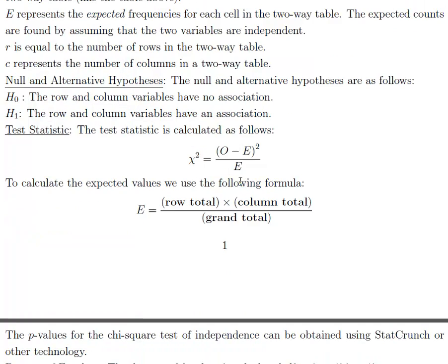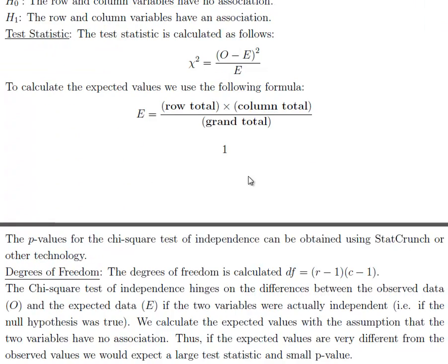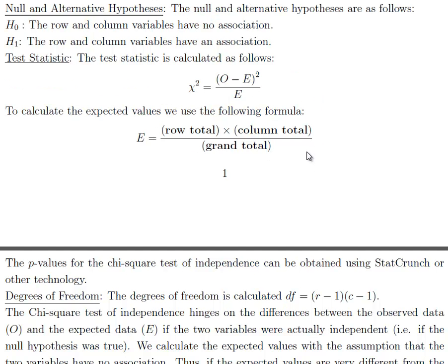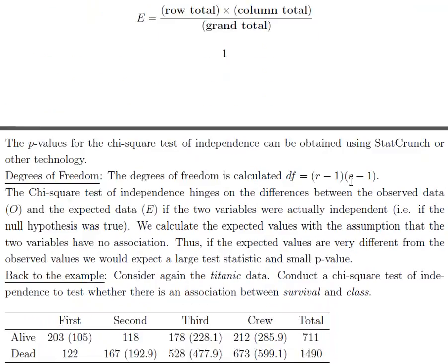We compute the test statistic by looking at those differences, the observed minus expected. Under the null hypothesis, what are the expected values? If those are close to the observed value then this test statistic is going to be fairly small, and that would result in a large p-value. So we would not reject the null. You can calculate the expected values very easily for each cell. You just take the row total times the column total divided by the grand total. I'm going to show you how to do that. It's fairly simple. There's not a lot of hard calculations for this test.